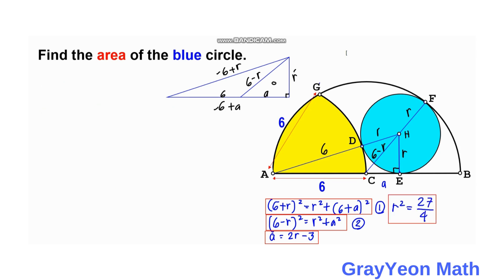So now for the area of the circle, area is equal to pi times R squared. But R squared is 27 over 4, so the area is pi times 27 over 4. And that is our answer.